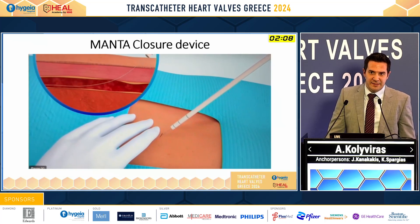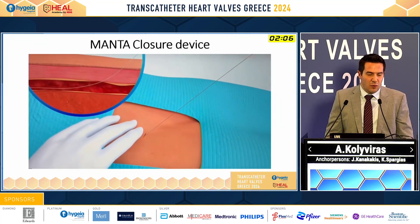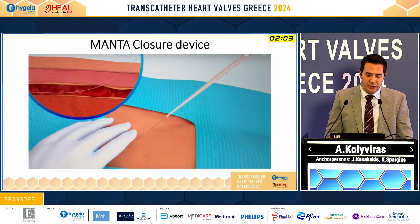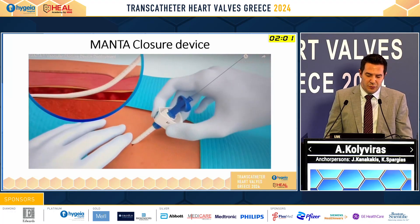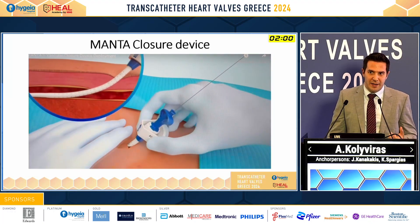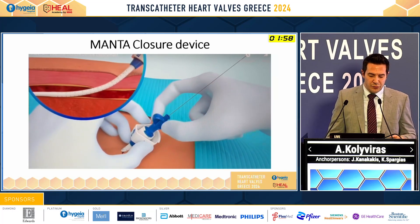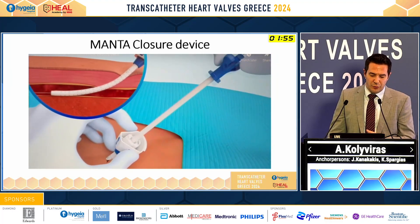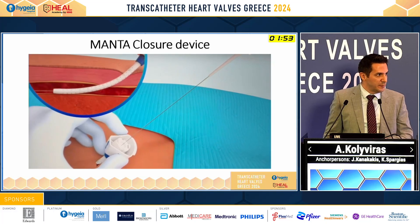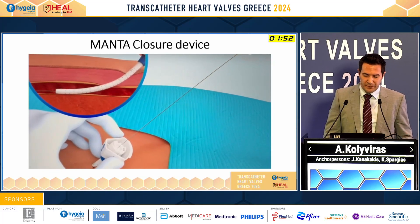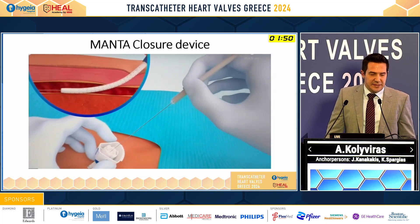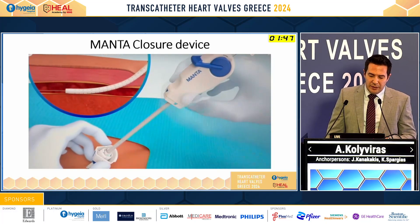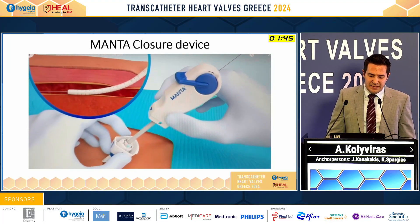Manta device is another technique — a collagen-based technique. It's very simple. We use the Manta at the end of the procedure. We remove the large-bore sheath, introduce the Manta sheath, remove the introducer, and keep the guide wire always in place. It's like using a big Angioseal, and we proceed with the Manta device.